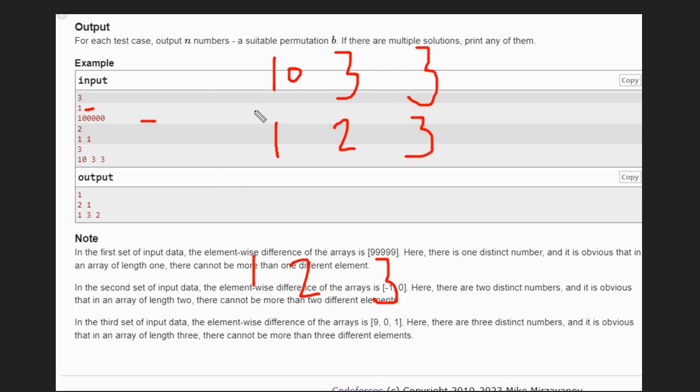Then what is the difference we will get? 9, 1, 0. So this will also be one answer. This is one answer because we have three distinct numbers.